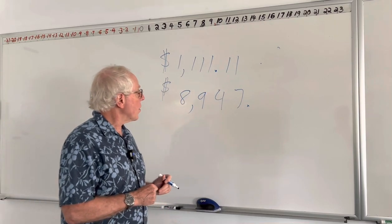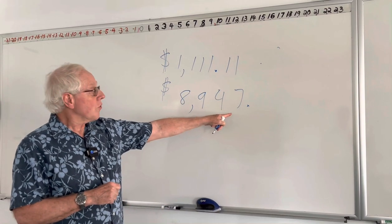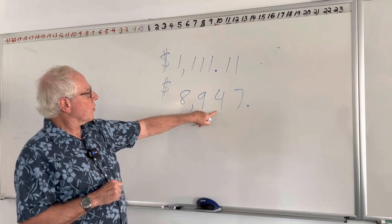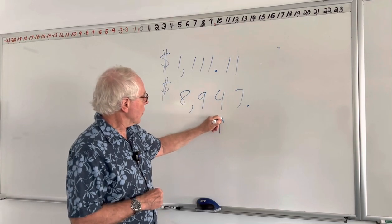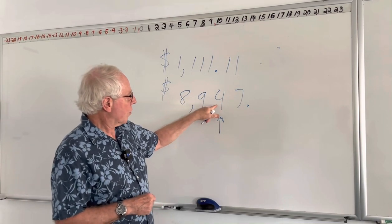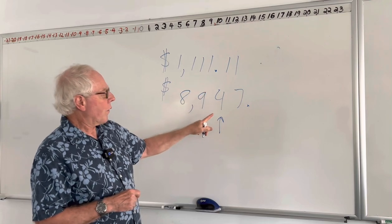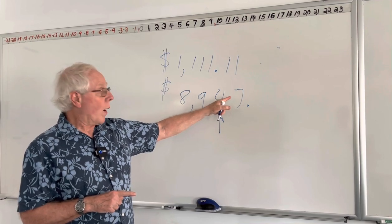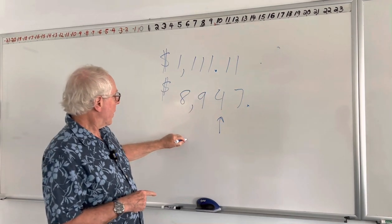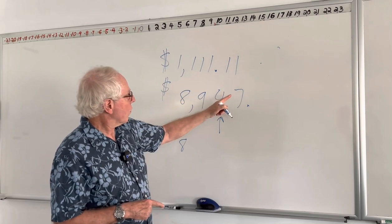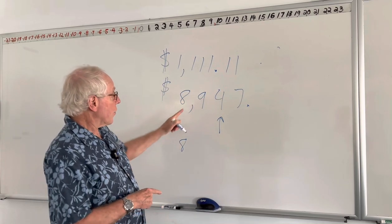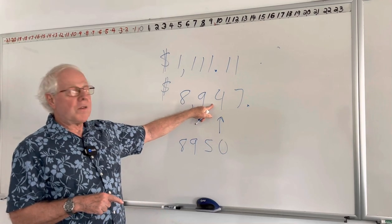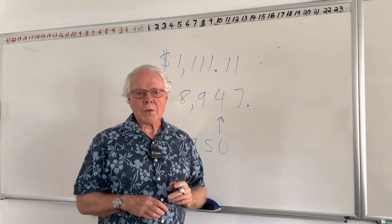If they said to round it to the nearest tens digit instead, that's this one, units, tens, hundreds, and so forth. This is the one we care about. To figure out what to do to it, we look one digit to the right. And in this case, the number seven is greater than five, so we would round up. $8,947 rounded to the nearest ten is $8,950. It's closer to $8,950 than it is to $8,940.